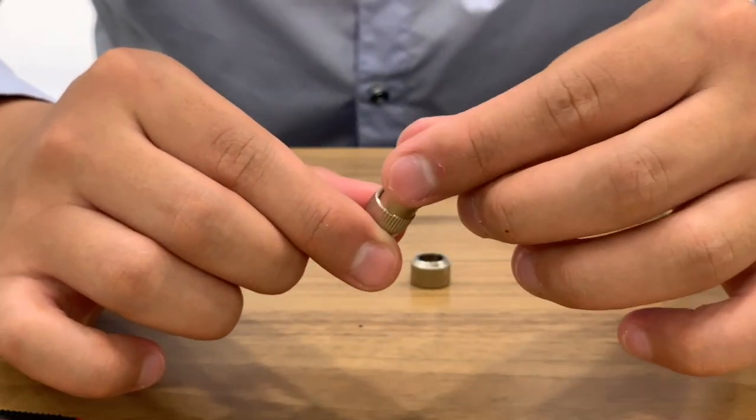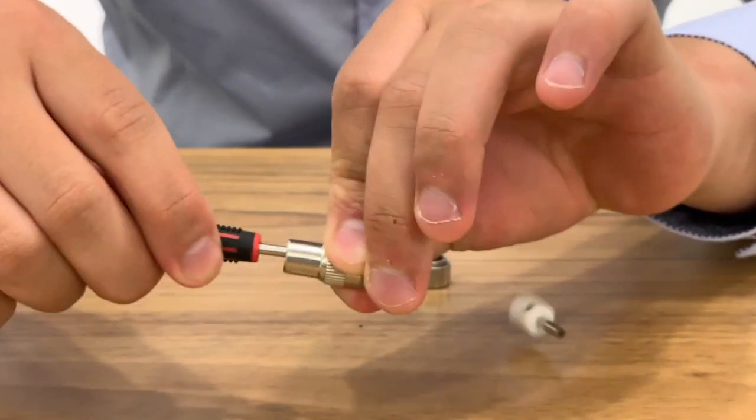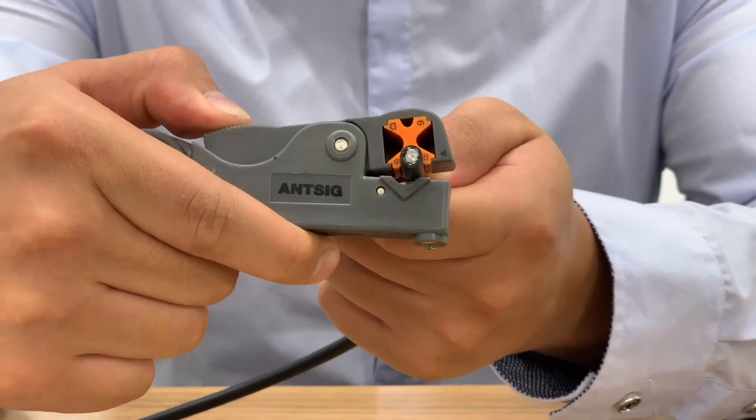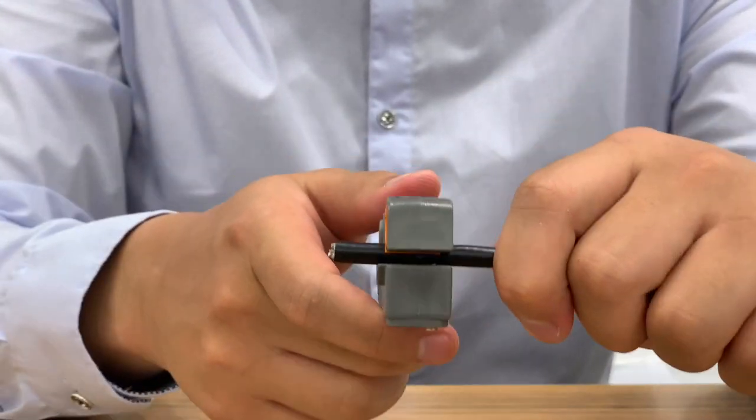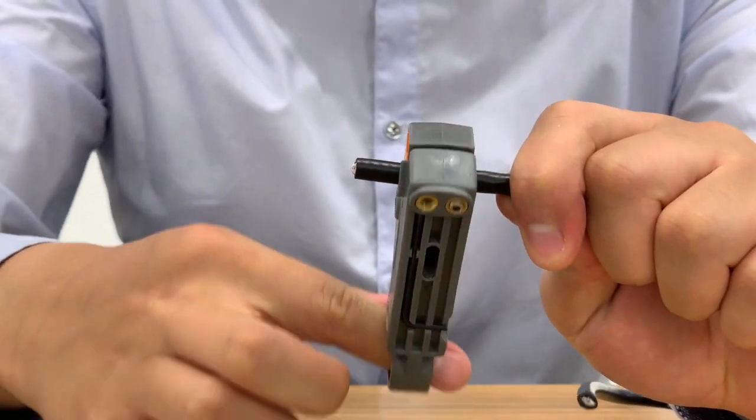First unscrew all the parts of the connector. Prepare the cable using a coax stripping tool. Place the tool onto the cable, rotate around and remove the tool.